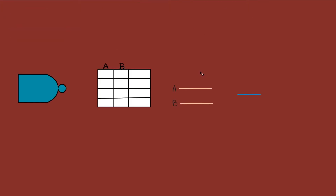Next up is the NAND gate. As you'd probably guess, the NAND gate is the opposite of the AND gate. It is a common gate, but it is not considered a fundamental gate — just know it exists.